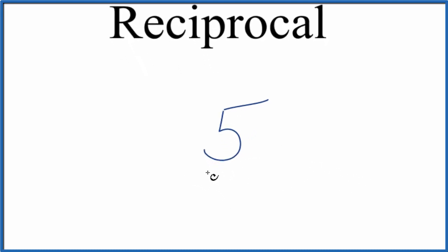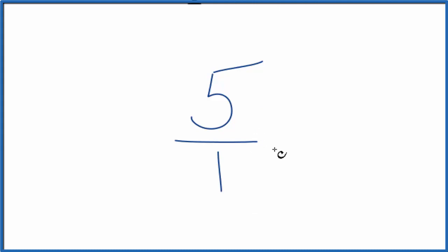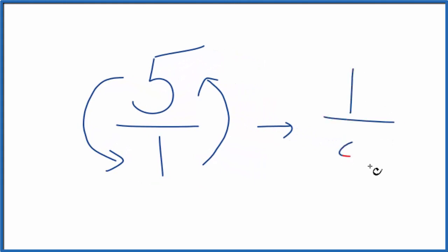So we could think of 5 as 5 over 1. It's still 5, 5 divided by 1 is 5, but now with reciprocals we take the numerator, we move that down to the bottom, the denominator up top, and we end up with 1 on top, 5 on the bottom.